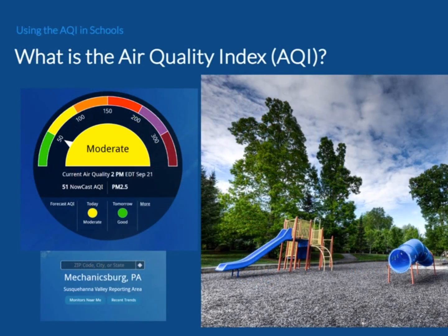So, what is the Air Quality Index? The AQI is EPA's tool for communicating daily local air quality and is used as the basis for making air quality forecasts. Color-coded categories provide information about air quality in an area, which groups of people may be affected by poor air quality, and steps people can take to reduce exposure to air pollution.